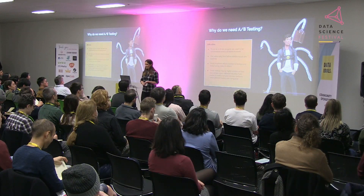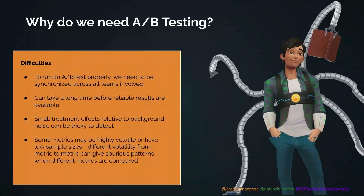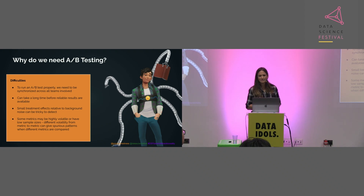There are also difficulties when running an A/B test. We want to make sure we're synchronized across all teams involved — product teams coming up with ideas, people configuring the test, people analyzing it, and those making decisions. It can also take a long time before we get reliable results. It's not like we can come up with an idea, test it, and roll it out the next day — we do need to wait quite a long time, especially if we want reliable results.